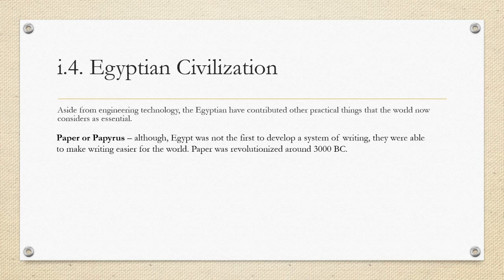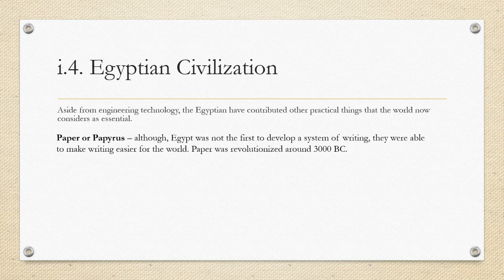The greatest invention contributed by the Egyptians was paper — or the papyrus. Papyrus was a plant. Although the Egyptians were not the first to develop a writing system, they made it easier for the world. Paper was revolutionized around 3,000 BC. Although the Chinese also invented their own paper, the Egyptian timeline is 3,000 BC, while the Chinese timeline falls between 105 and 100 BC.